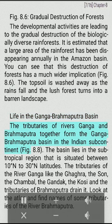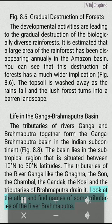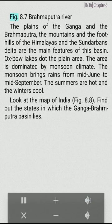Life in the Ganga Brahmaputra basin. The tributaries of rivers Ganga and Brahmaputra together form the Ganga Brahmaputra basin in the Indian subcontinent. The basin lies in the subtropical region that is situated between 10 degrees north to 30 degrees north latitudes. The tributaries of the river Ganga like the Ghagra, the Son, the Chambal, the Gandak, the Kosi, and the tributaries of Brahmaputra drain it. The plains of the Ganga and the Brahmaputra, the mountains and the foothills of the Himalayas, and the Sundarbans delta are the main features of this basin.